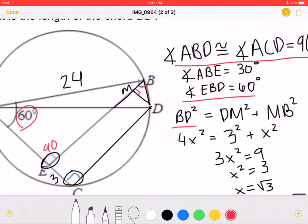BD squared, which is the hypotenuse, must be equal to DM squared plus MB squared. And this, again, is a 30-60-90 triangle. Therefore, we can mark MB as being equal to X.